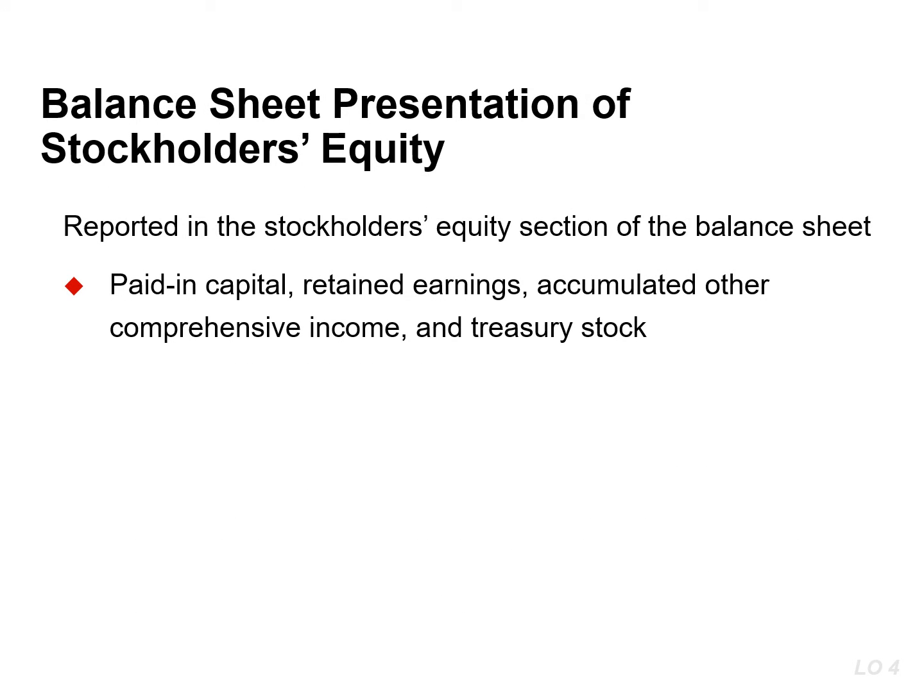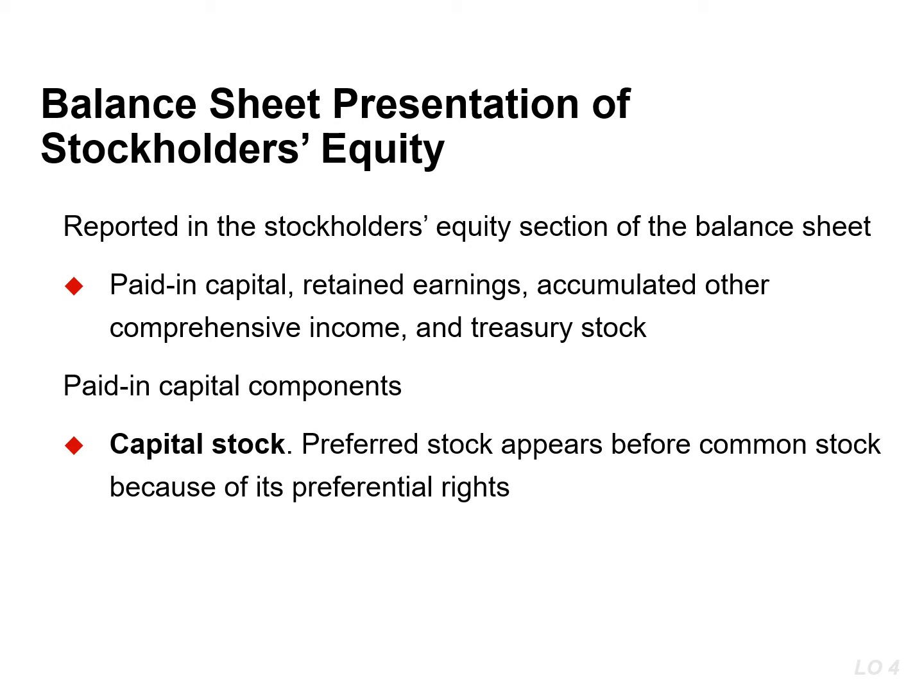In the stockholders' equity section of the balance sheet, companies report paid-in capital, retained earnings, accumulated other comprehensive income, as well as treasury stock. Within paid-in capital, two classifications are recognized. The first one is capital stock, which consists of preferred and common stock.